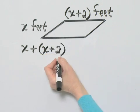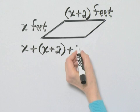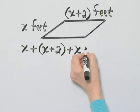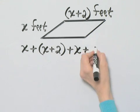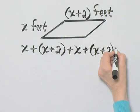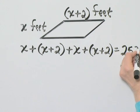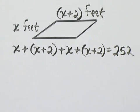What am I doing right now? I'm translating. Plus, if this is x feet, this is x feet. So plus x feet plus that last dimension x plus 2. And we are given that the perimeter is 252. This is all in feet.